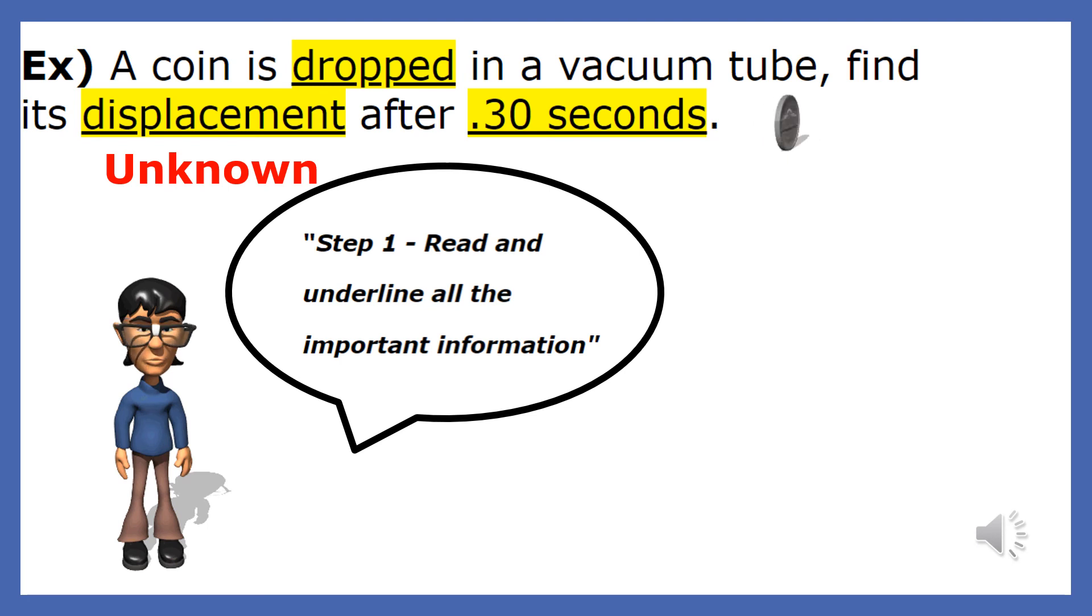It is also important to underline the unknown. The unknown is the motion variable you are trying to find. In this case, it is the coin's displacement.